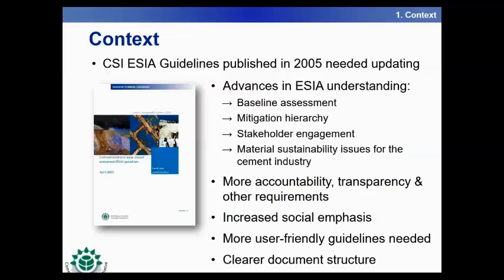In the past, ESIA has tended to focus on the E for environmental, with insufficient emphasis on the S for social aspects of impact assessment. There is a strong feeling that the guidelines needed to be easier to use and more readable, with a document structure that reflected the ESIA process itself, enabling readers to follow the guidelines in a logical flow. So we knew that a review was required, and needed to plan a consultation process to capture the best advice on how to make the revised guidelines more useful.